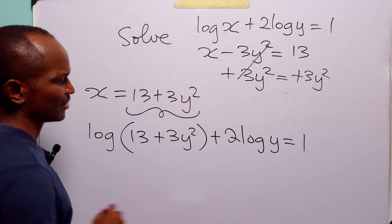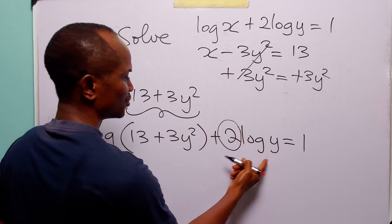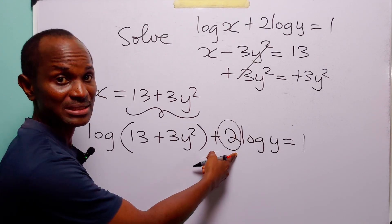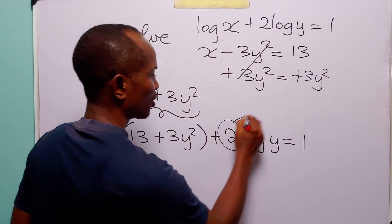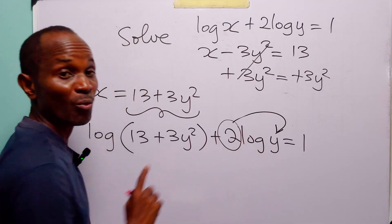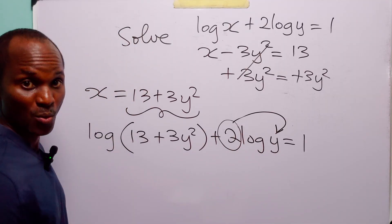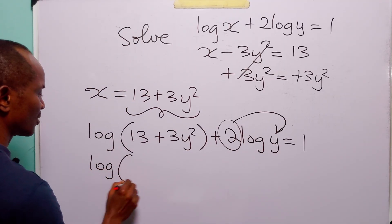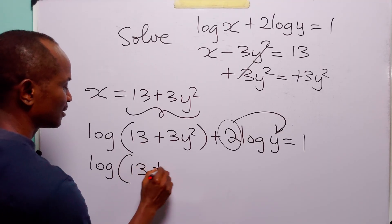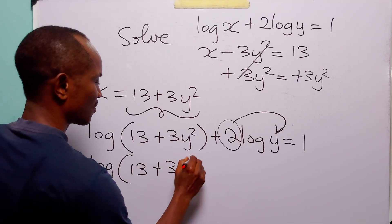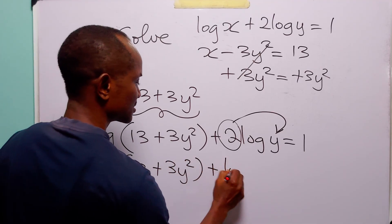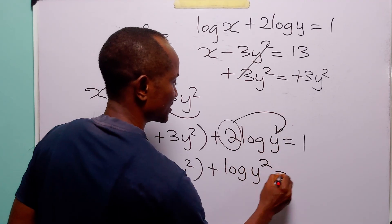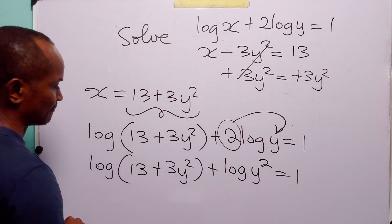The next thing we are going to do is to apply the power rule to this term. That is, we are going to take this multiplier 2 up to become the exponent of y. When we do that, this equation becomes log(13 plus 3y squared) plus log(y squared) is equal to 1.